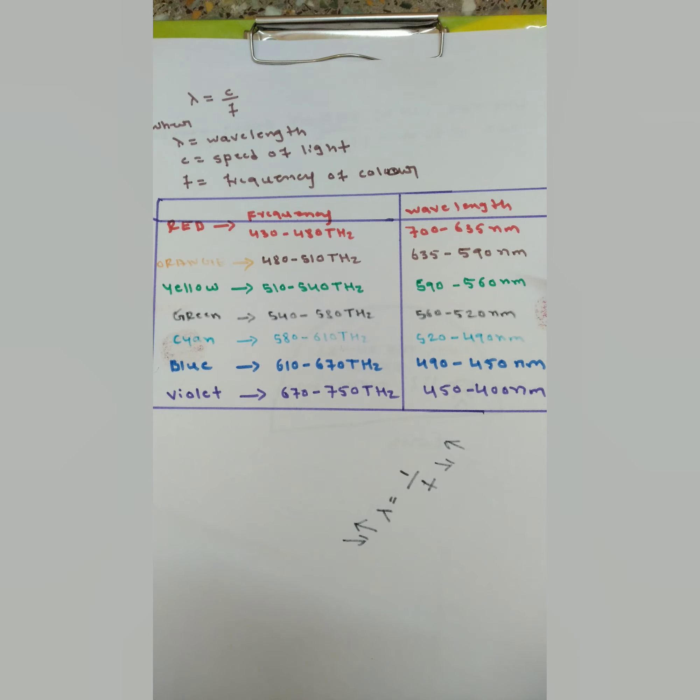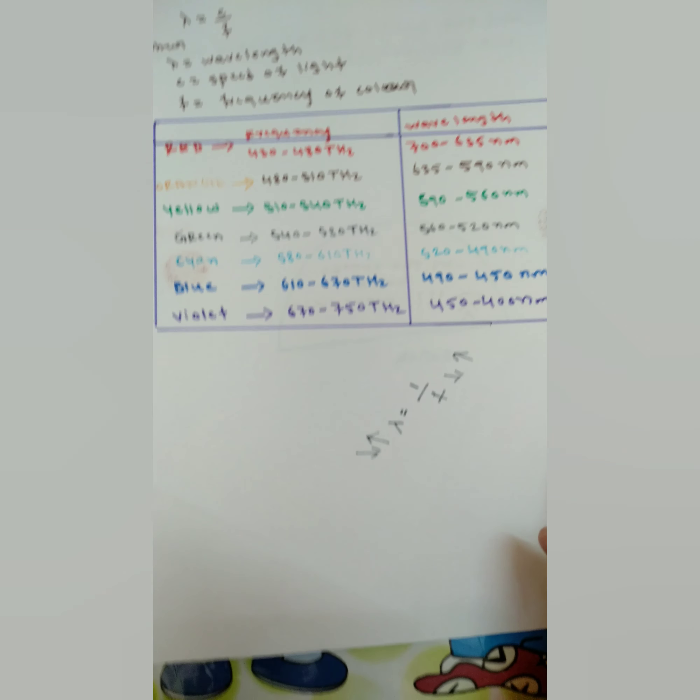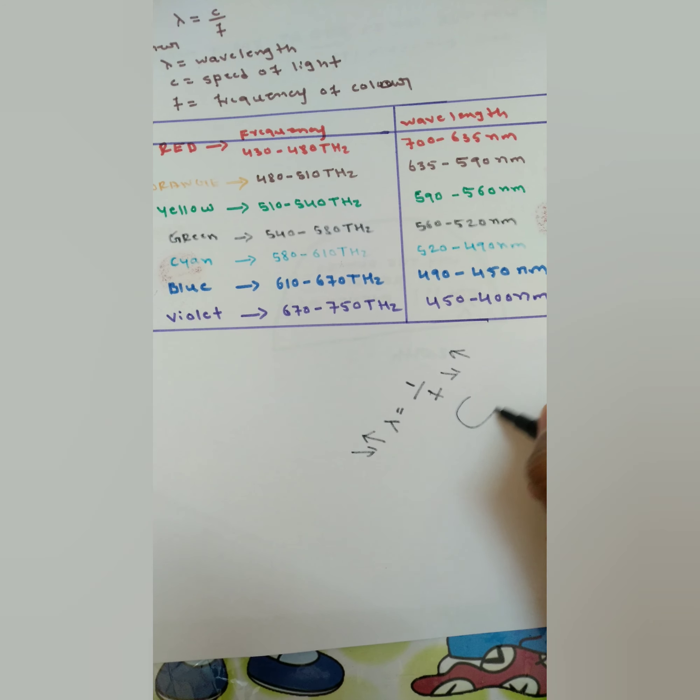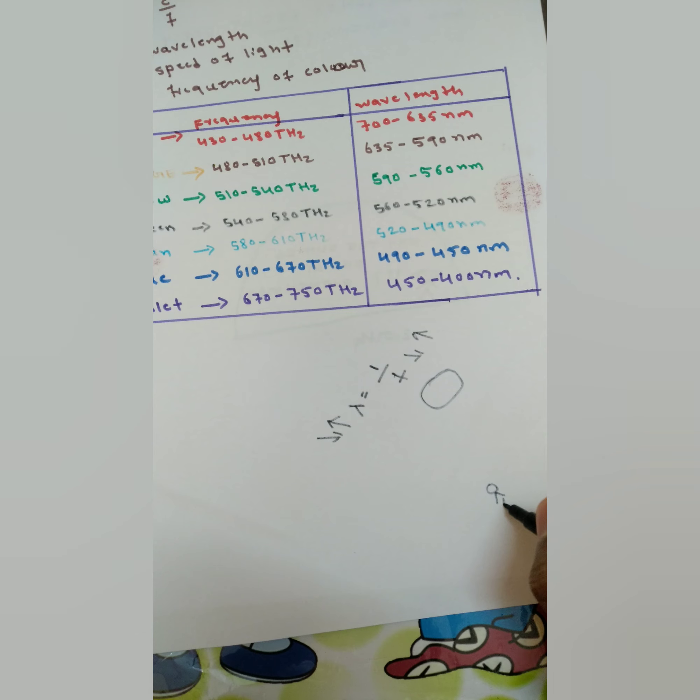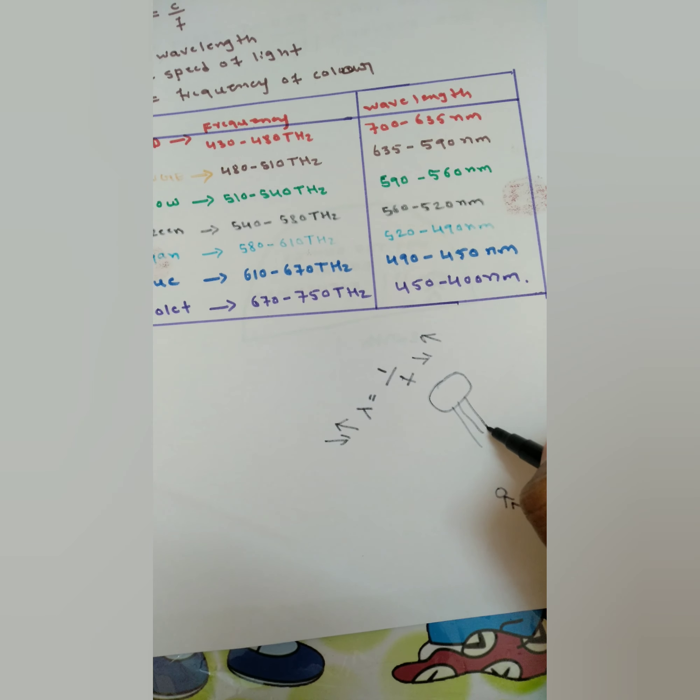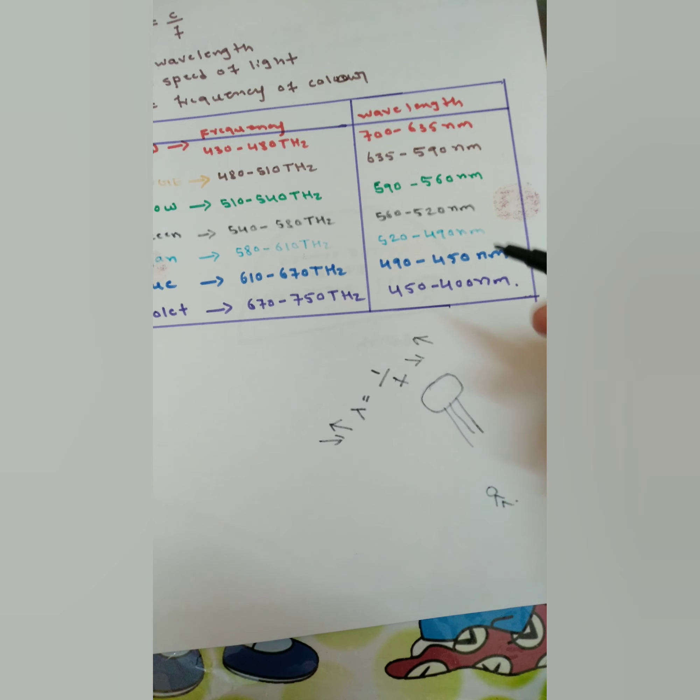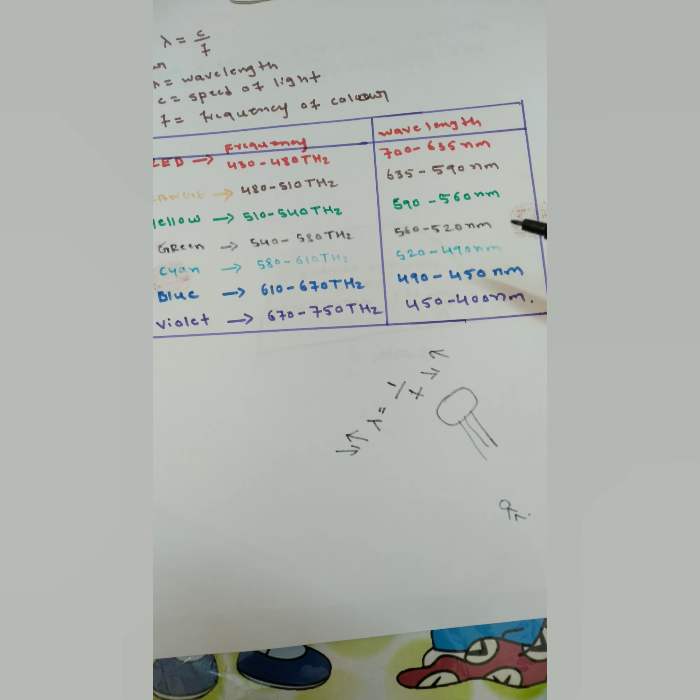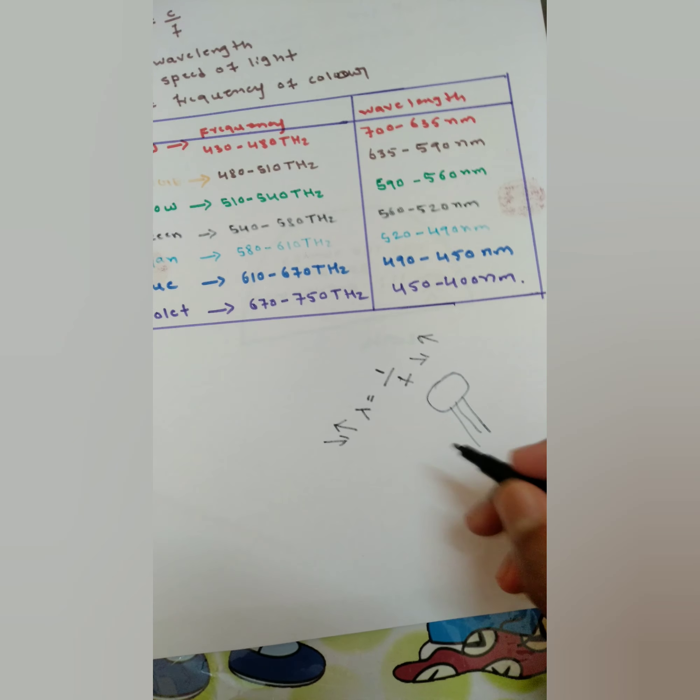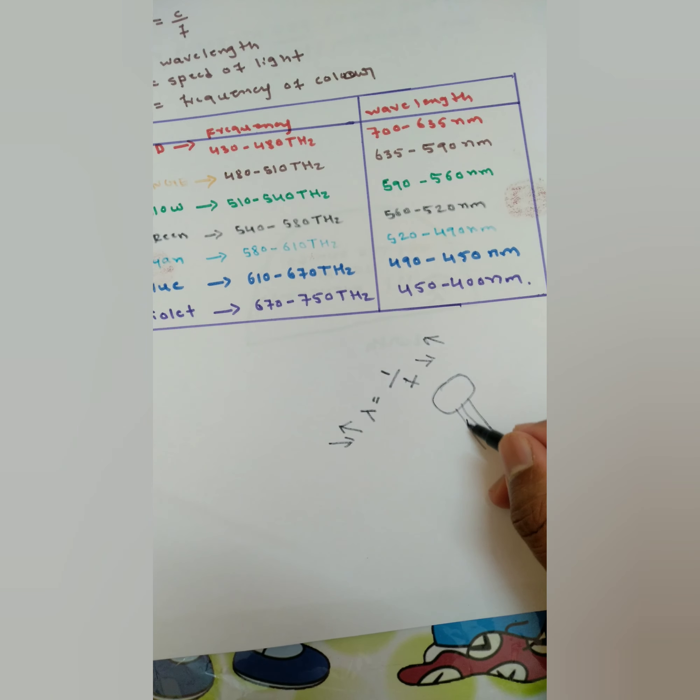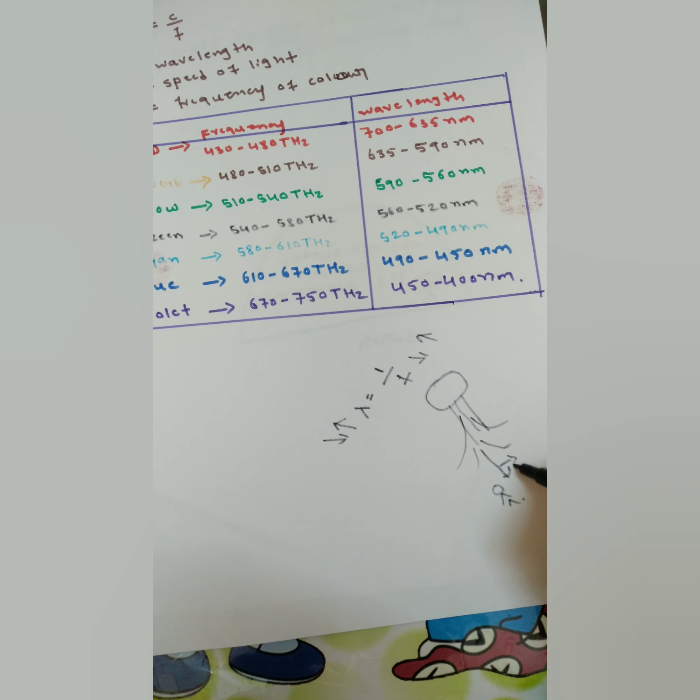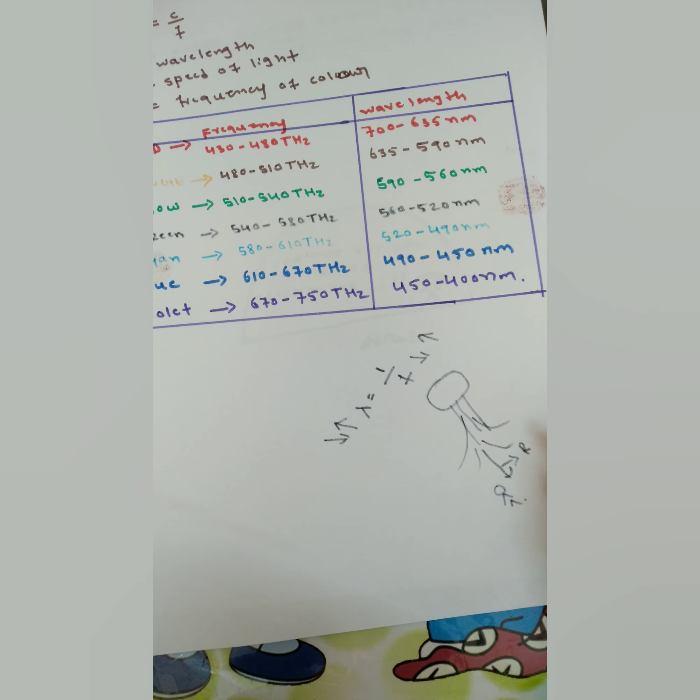That's why the sun looks red. Suppose here is the sun and you are here, and the sun rays are coming towards you. While coming, due to smaller wavelengths, first violet will disappear, then blue, then green, then yellow, then orange. The color which reaches you will be red because its wavelength is more.